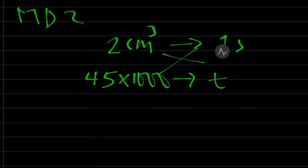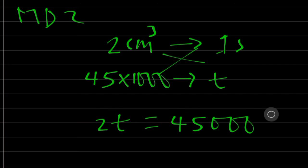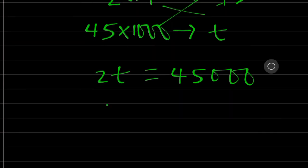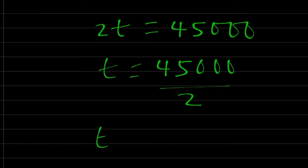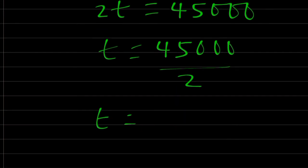Therefore, we cross-multiply. Therefore, we have 2T is equal to 45,000. Therefore, T is equal to 45,000 divided by 2. Then we are going to have T is equal to 22,500.